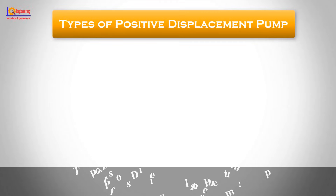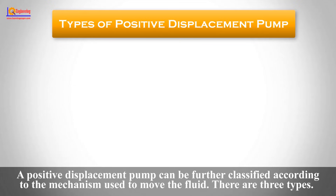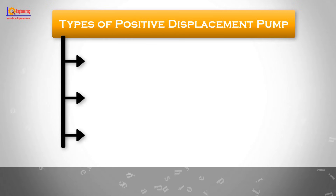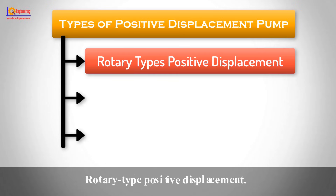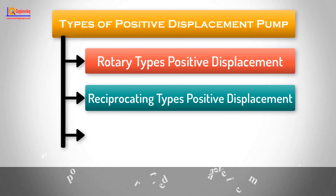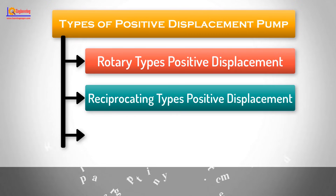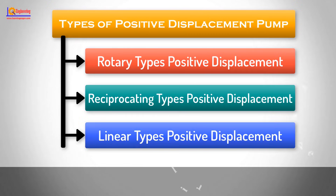A positive displacement pump can be further classified according to the mechanism used to move the fluid. There are three types: Rotary Type Positive Displacement, Reciprocating Type Positive Displacement, and Linear Type Positive Displacement.